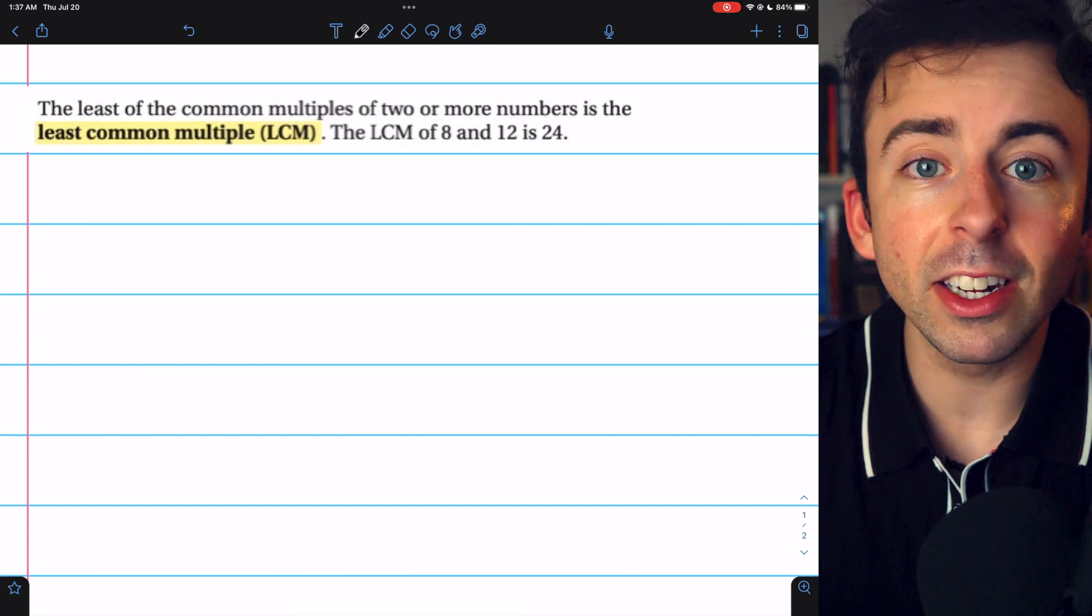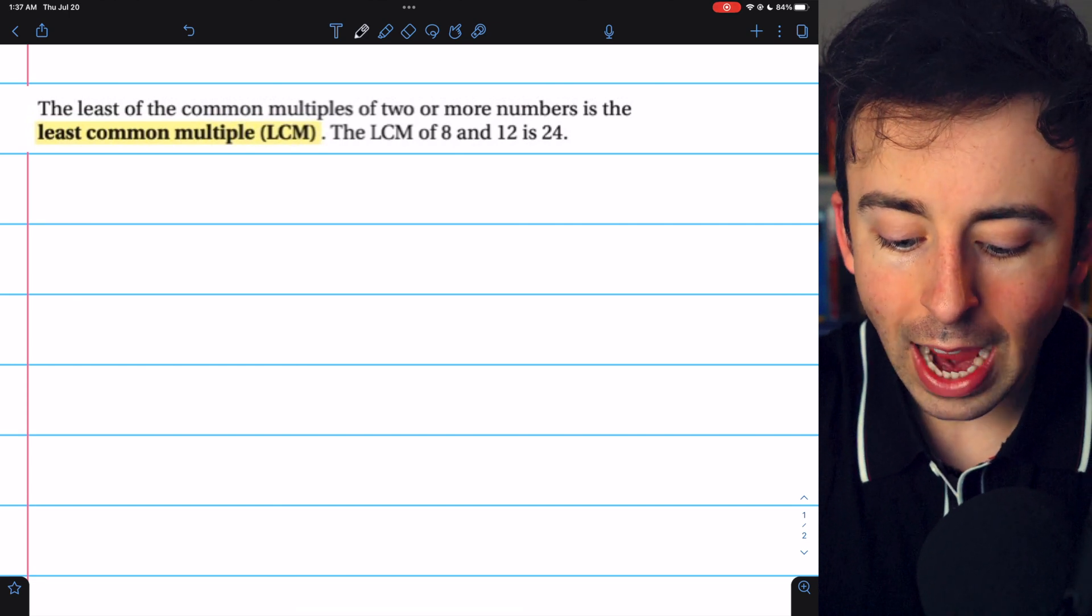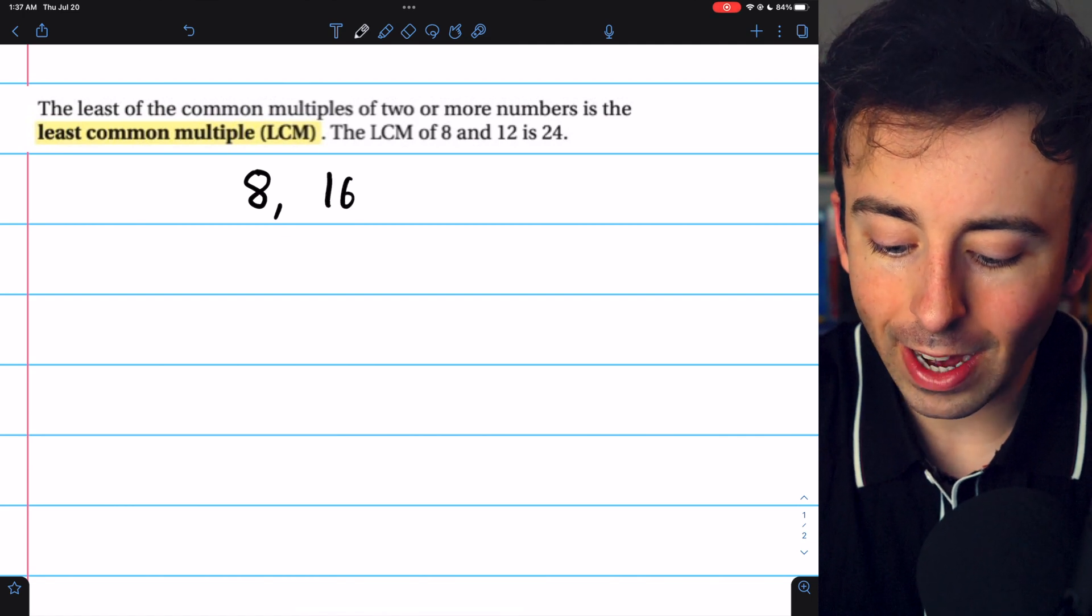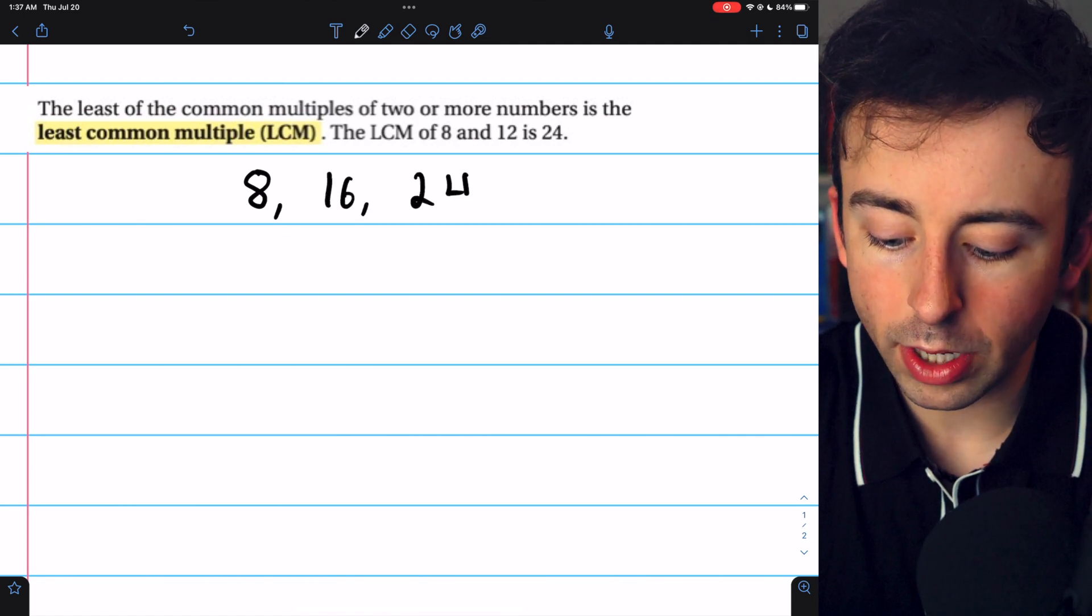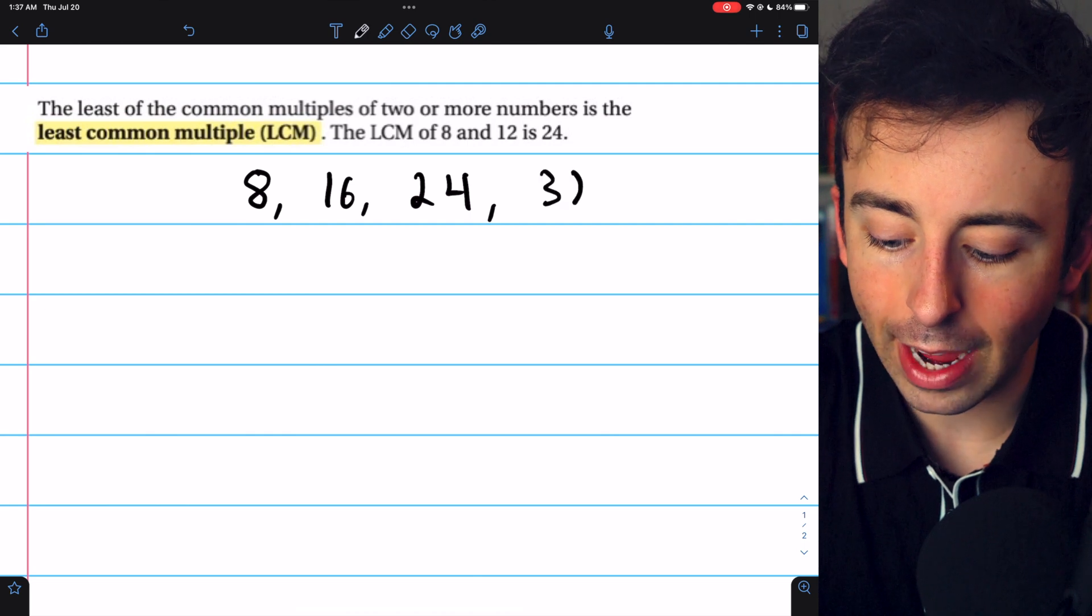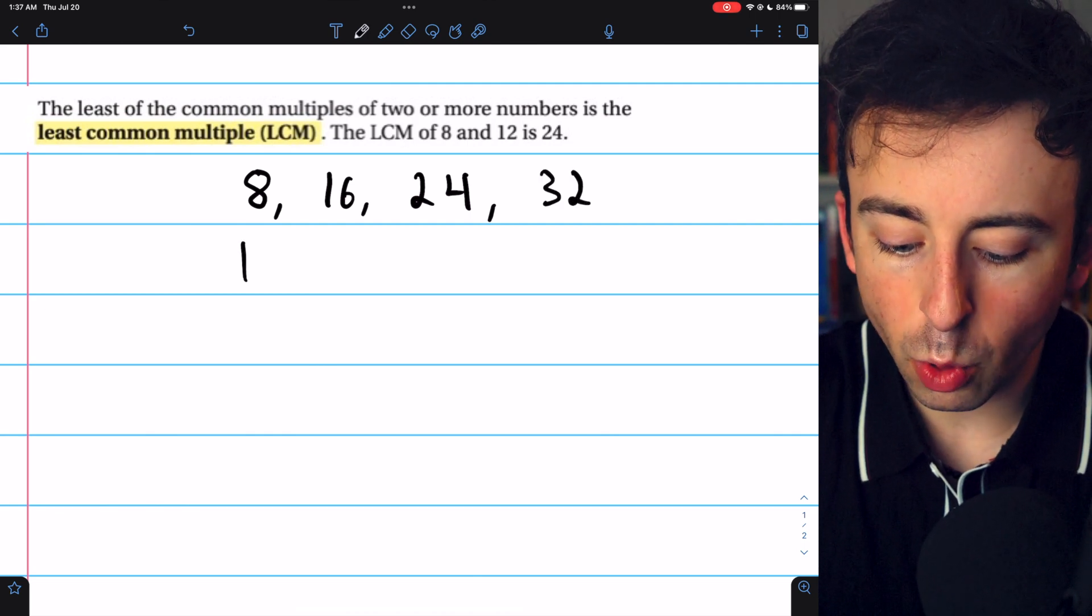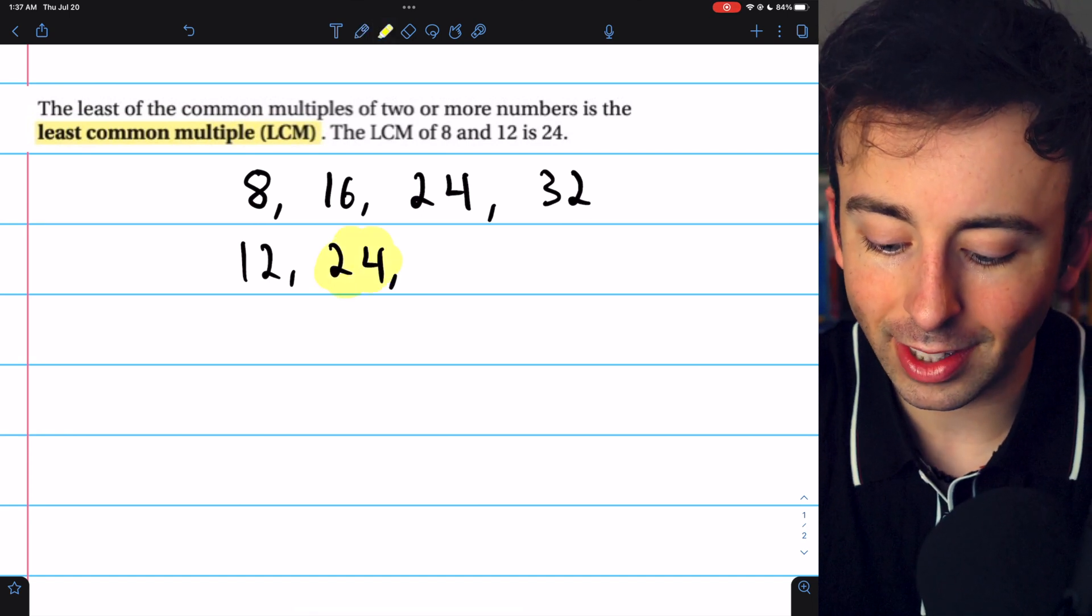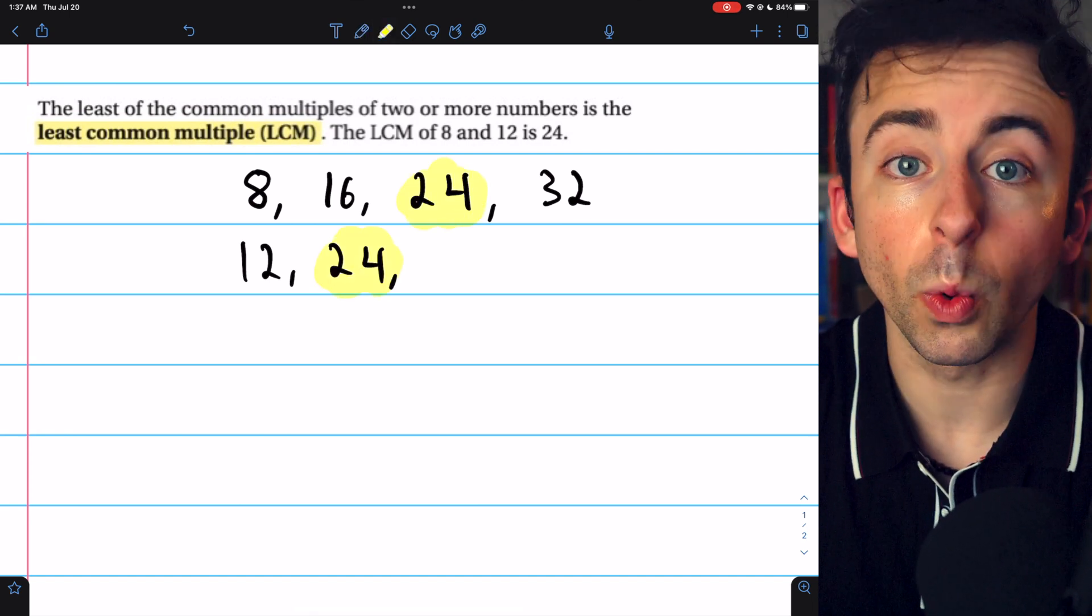One way to figure that out would be to just list out the multiples and then notice where the first common multiple occurs. The multiples of 8 are 8, 16, 24, 32, and so on. And the multiples of 12 are 12, 24, and you would stop there and say, hey look, the least common multiple must be 24.